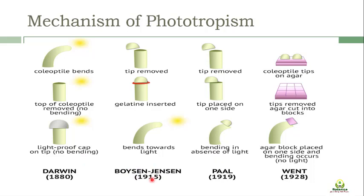After Darwin, Boysen-Jensen in 1915 carried out experiments on the oat coleoptile. He removed the tip and inserted a gelatin block - a jelly-like material - between the tip and the rest of the plant. Gelatin allows the chemical produced in the tip to be transported through it, so it does not stop the signal coming from the tip. The result was that a bending response was seen towards the source of light, meaning the substance produced in the tip is transported to the lower part of the plant.